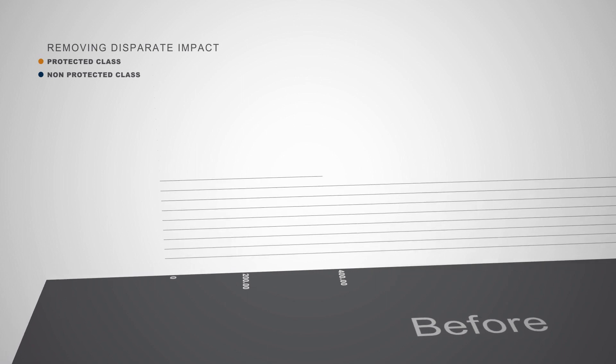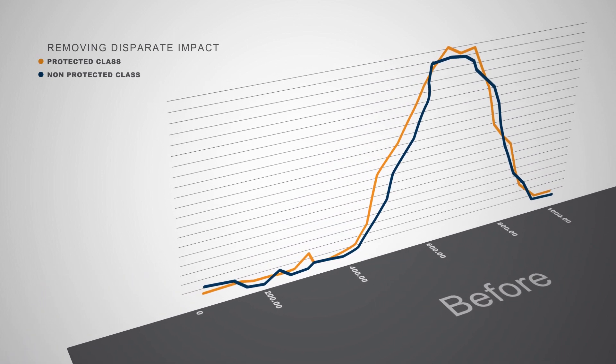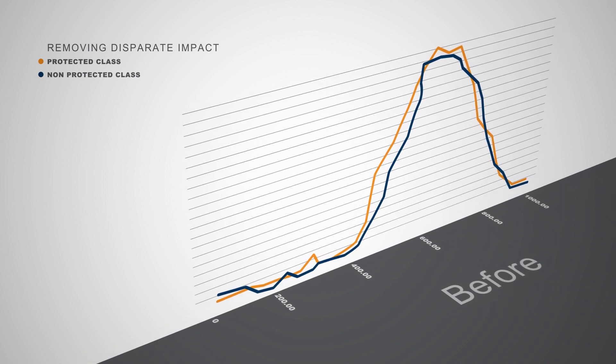So in the first graph you see two distributions, one in orange and one in blue, the orange being the protected class and blue being non-protected class. You can see a little bit of difference between the two.